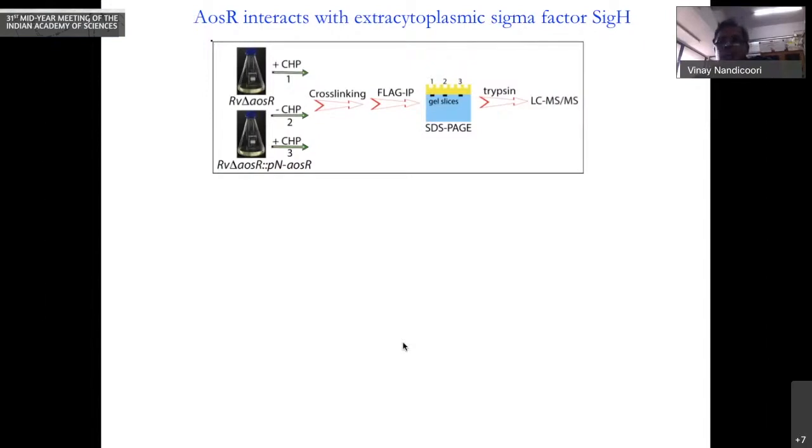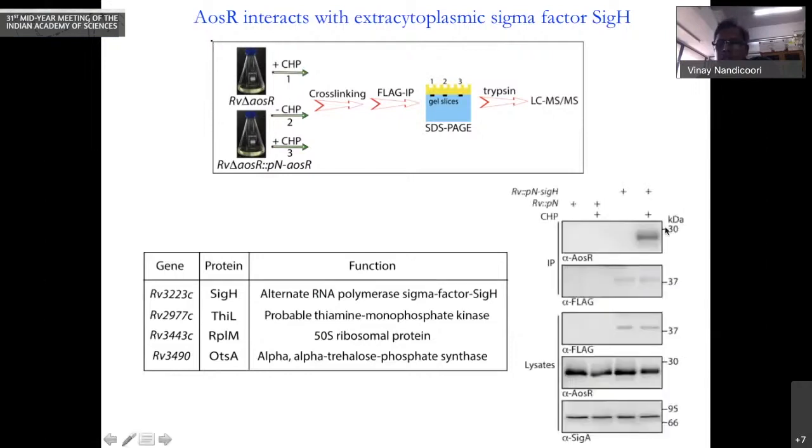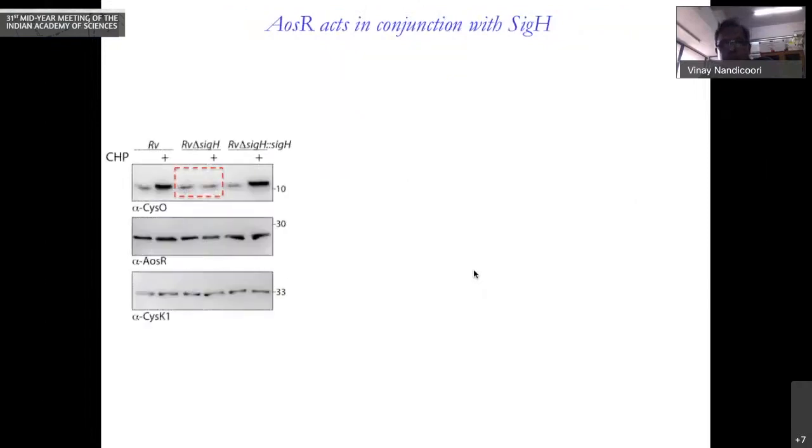We went ahead and wanted to identify how is this doing. Towards doing this, we found out what are the novel interacting partners of this transcription factor. One of the interesting proteins that we found was a protein named Sigma H, which is an alternate sigma factor. This was validated by Western blots. We find that Sigma H indeed interacts with AOSR in oxidative conditions only and very specifically.